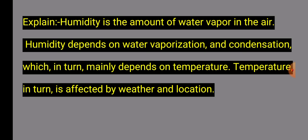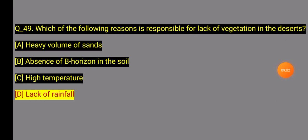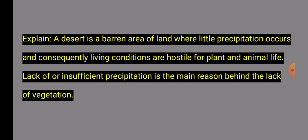Question 49: Which of the following is responsible for the lack of vegetation in the desert? Option D: Lack of rainfall is the reason responsible for lack of vegetation in the desert. Question 49 Explanation: A desert is a barren area of land where little precipitation occurs and consequently living conditions are hostile for plants and animal life. Lack or insufficient precipitation is the main reason behind the lack of vegetation.